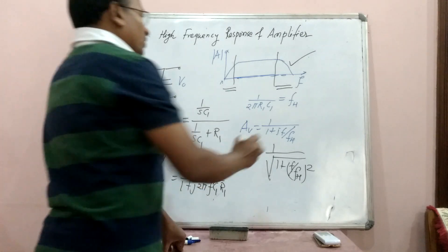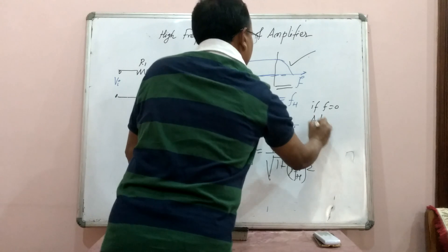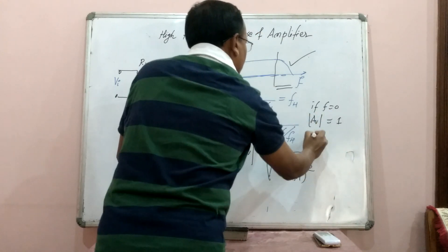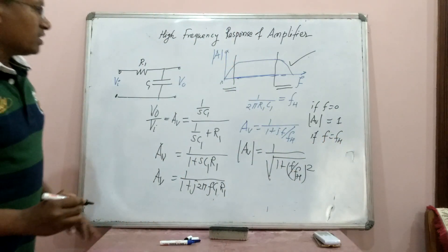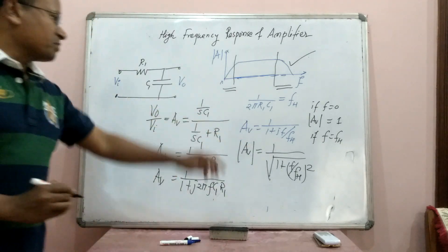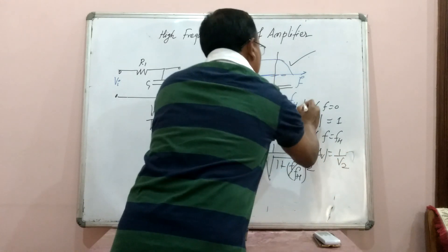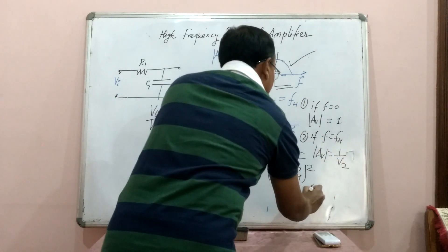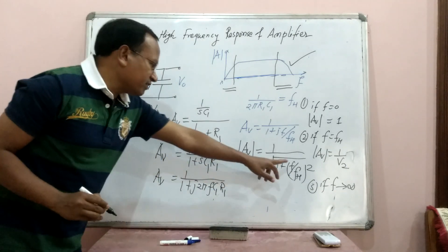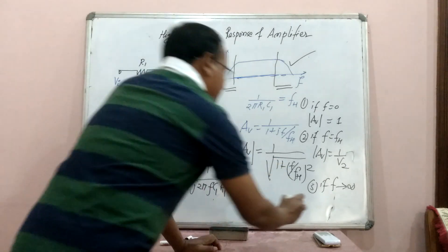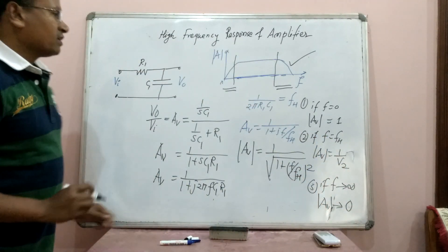Let us study three key cases. If F equals 0, the gain magnitude equals 1. If F equals FH, substituting shows that AV becomes exactly 1/√2. And if F tends to infinity, the voltage gain magnitude tends toward 0.